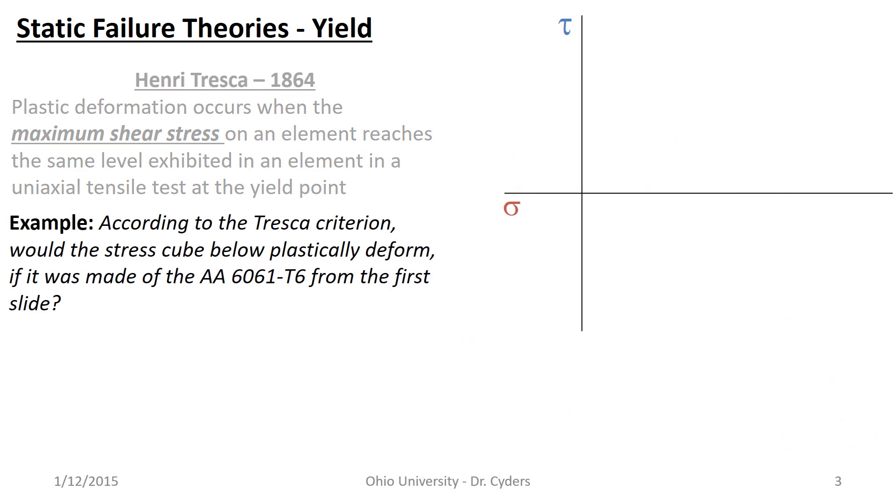So let's do an example. According to the Tresca criterion, would the stress cube below plastically deform if it was made from the same aluminum from the first slide? So now we've decreased our axial stress just a little bit from the yield point, but we've imposed a slight shear. Now, you might say, well, 42,500 plus 3,500 is 46,000, so as a result, that must be yielding. Well, it doesn't add exactly that way. Remember, we need to combine this with Mohr's circle and find the maximum shear.